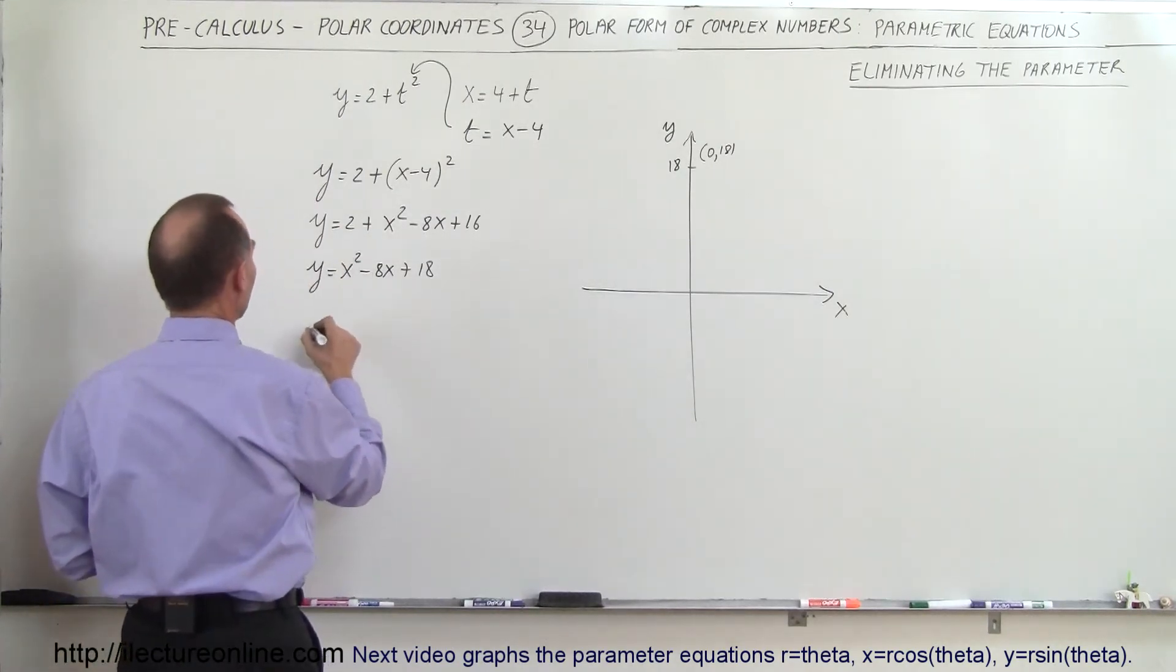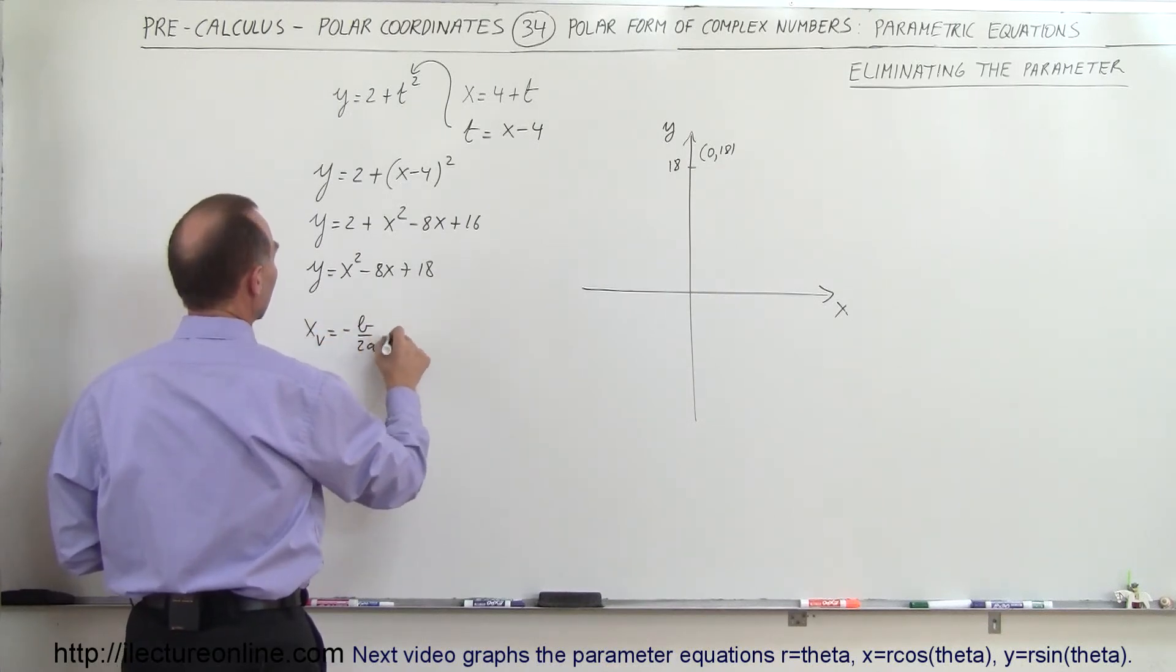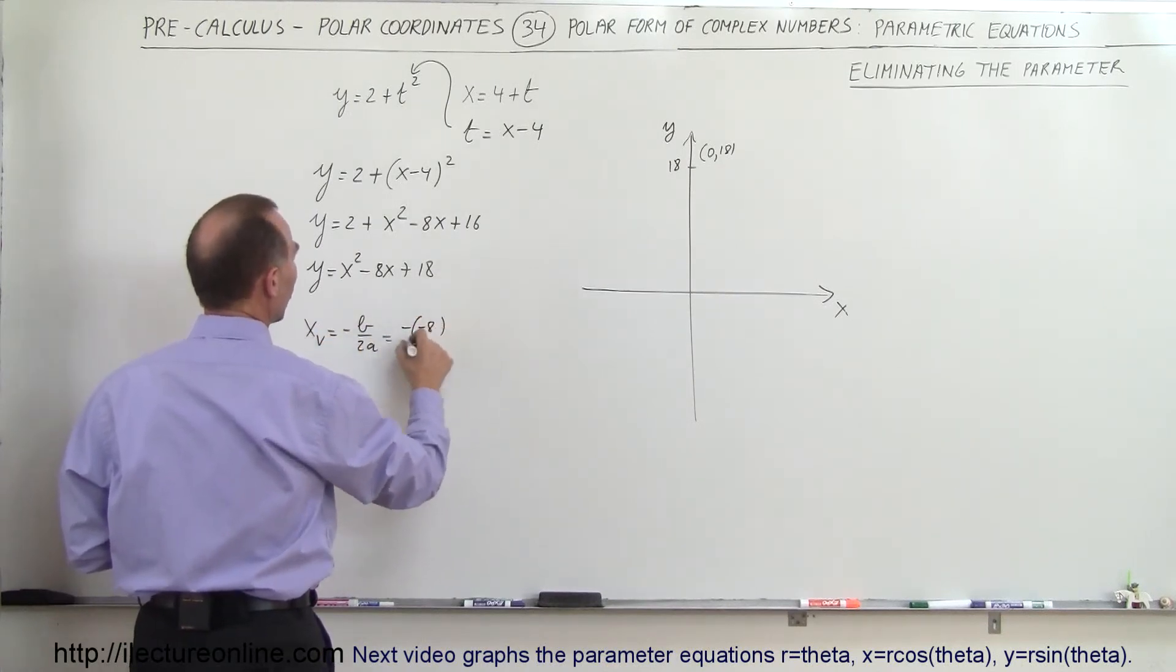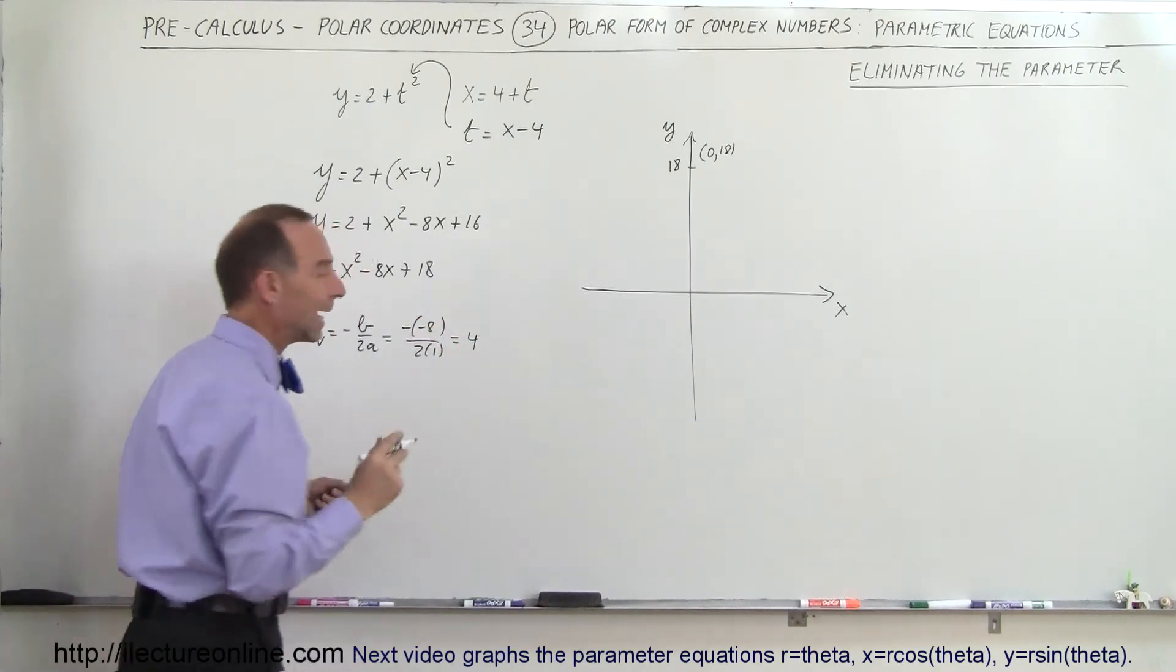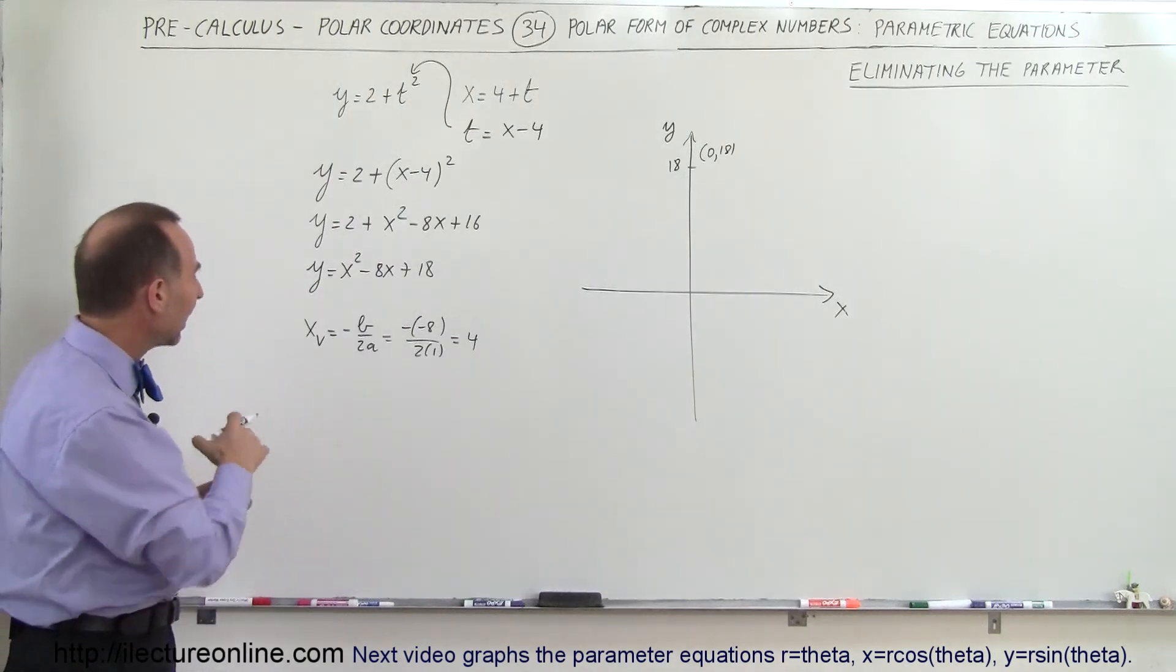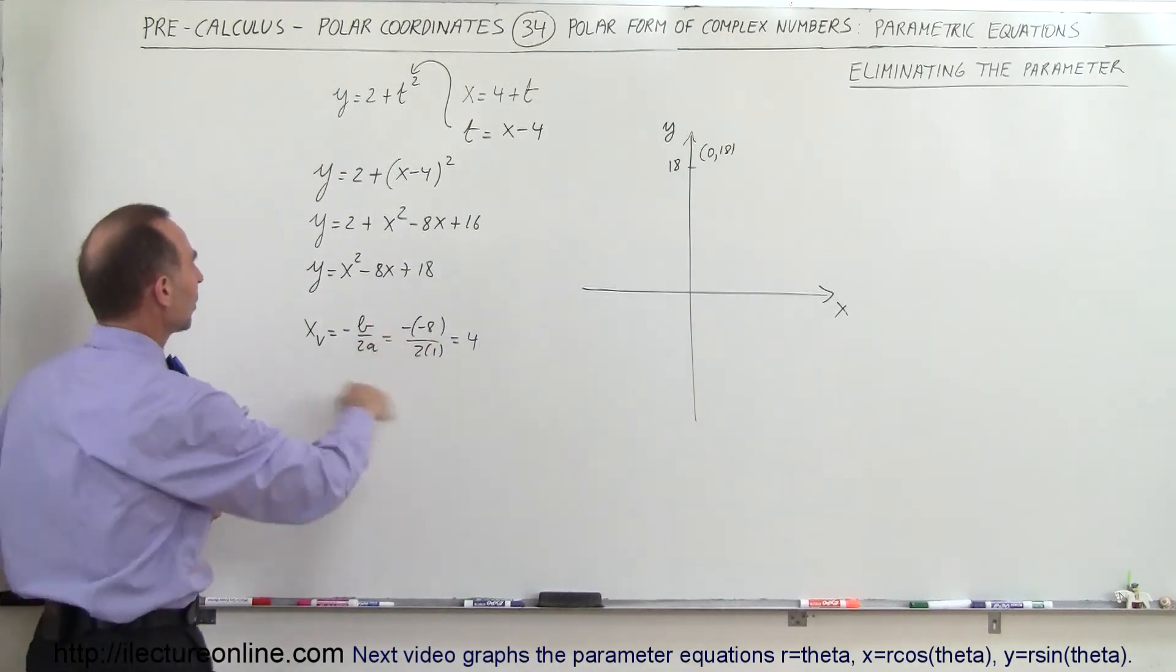Let's say we want to know where the axis of symmetry is, so we want to find the x-coordinate of the vertex. X of the vertex is equal to minus b over 2a. That would be minus negative 8 over 2 times 1, which is equal to 8 divided by 2, which is 4. So x is 4 at the vertex.